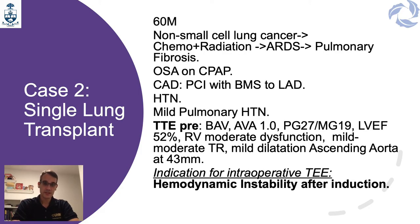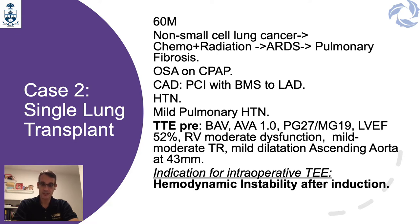The second case is a single lung transplantation patient — a 60-year-old male with a previous history of non-small cell lung cancer requiring chemoradiation, complicated with ARDS, and ultimately pulmonary fibrosis requiring a single lung transplant. He also had hypertension, coronary artery disease with PCI requiring a bare metal stent to the LAD, and OSA on CPAP. Pre-op transthoracic echo showed a bicuspid aortic valve with an aortic valve area close to 1 cm², but normal mean gradients of 19, mildly reduced LVEF of 52%, moderately reduced RV systolic function, mild to moderate aortic regurgitation, and dilation of the ascending aorta at 43 mm.